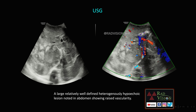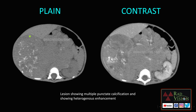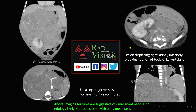On ultrasound, there is a large heterogeneously hypoechoic mass lesion crossing the midline to the left side with raised vascularity on color Doppler. On CT, a large soft tissue density lesion with multiple punctate calcifications is seen crossing the midline. With IV contrast, it shows heterogeneous enhancement with areas of necrosis, crossing the midline behind the aorta, causing elevation of the aorta from the vertebra. Coronal sections show the mass displacing the right kidney inferiorly with complete destruction of the vertebral body.